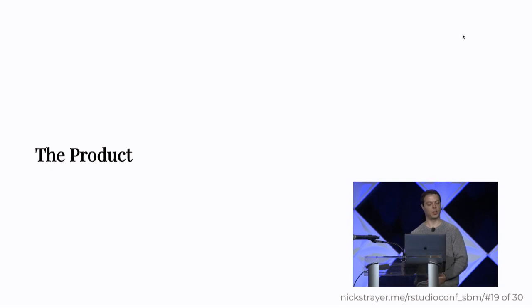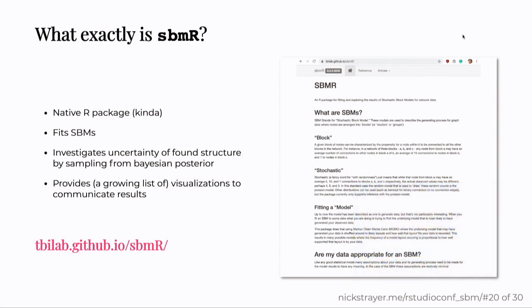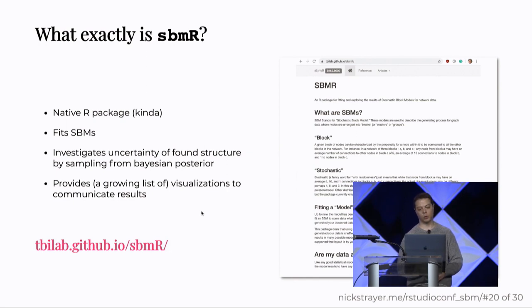So now moving on to the last part, which is the actual product that this whole process has been leading up to. So quickly taking a step back to reorient ourselves, what exactly is SBMR? That's a tentative name for the package. It probably will change. It's not very creative. But it's a native R package, kind of. It uses C++ code, but thanks to RCPP, it's essentially native at this point. And it fits stochastic block models. Its primary focus is investigating the uncertainty of the found structure by sampling from the Bayesian posterior. So if you're familiar with Bayesian models, you can get uncertainty by looking at the posterior distribution. And it provides a growing list of visualizations to communicate the results. This is the link to the package down site. It's not exactly ready for prime time yet, but if you want to go use it, there's a good amount of documentation written. Please report all the bugs that you will find.